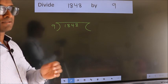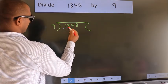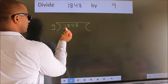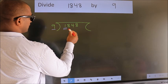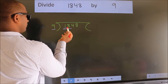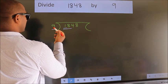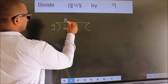Next. Here we have 1, here 9. 1 is smaller than 9, so we should take two numbers: 18. When do we get 18 in the 9 table? 9 times 2 is 18.